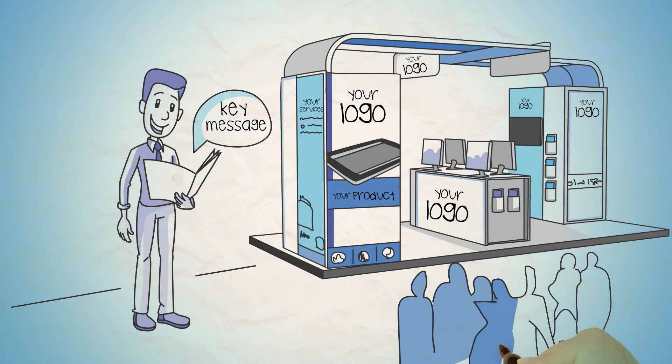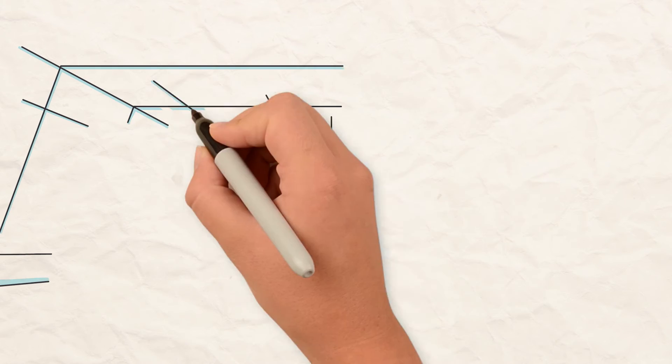They ensured his message is communicated clearly and effectively, and that it meets his objectives and agreed budget. Clip Global transported Sam's stand to the venue and assembled it the day before the show.